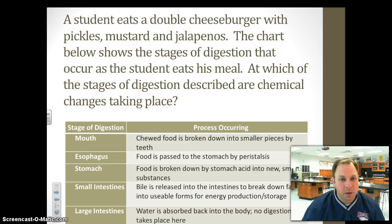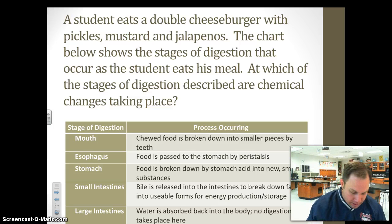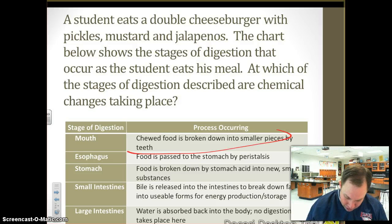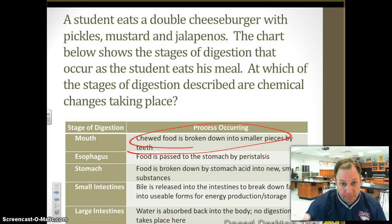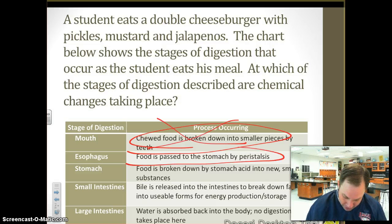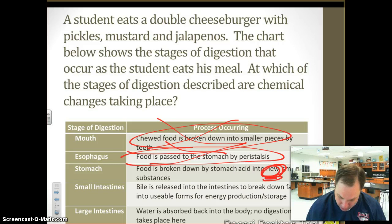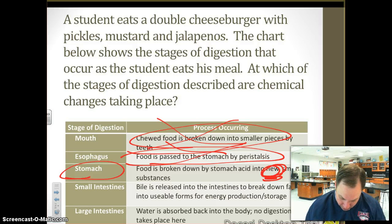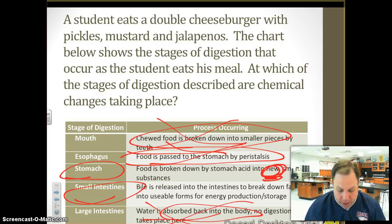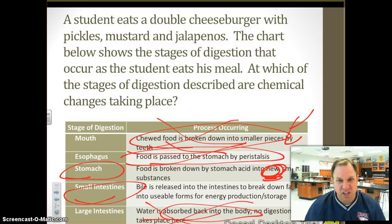As a student eats his meal, the chart shows the stages of digestion. At which stages does digestion describe chemical changes taking place? In the mouth, food is chewed up into smaller pieces — apple to applesauce — that's physical change, not there. Food passed through the stomach by peristalsis — that's physical, not there. Food is broken down by the stomach into new substances — there's our key word, so it does occur in the stomach. Bile is released into the intestines to break down fat — chemical change there too. The large intestine absorbs water, so not there. So: stomach and small intestines. Keep in mind chemical digestion does occur in the mouth too, it's just not described in this particular chart.